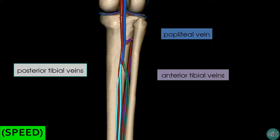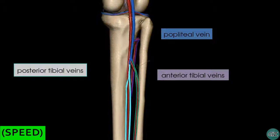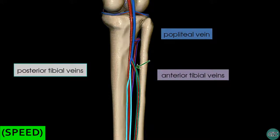Also visible on this model is a vein highlighted in green. This vein accompanies the fibular artery and is known as the fibular vein, which drains the lateral compartment of the leg.